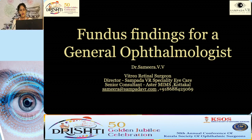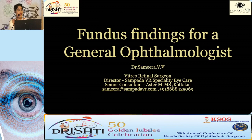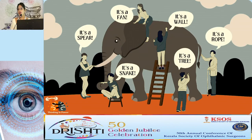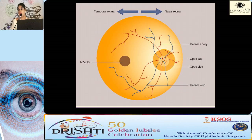Good morning everyone. Fundus findings for the general ophthalmologist is a very vast topic, and I don't know how I'm going to do justice in an eight-minute talk. I'll be brushing through the common things we see in normal practice. It's like the story of an elephant with six blind men — everyone perceives differently. With a structured examination of the retina evaluating the disc, posterior pole, mid-periphery, and periphery, you can arrive at a conclusion.